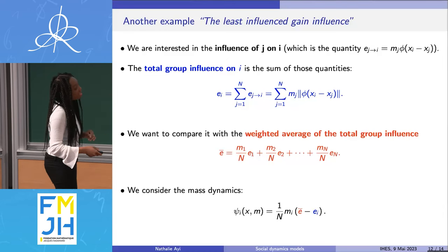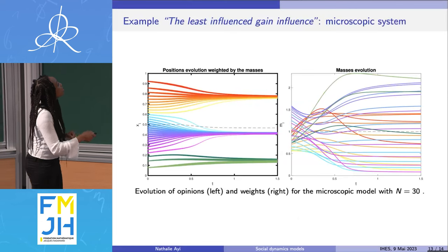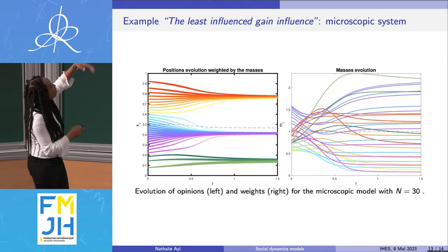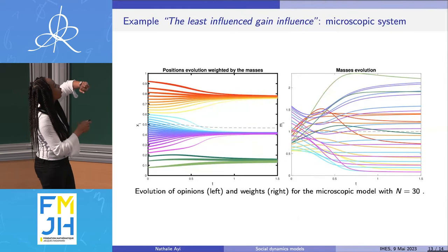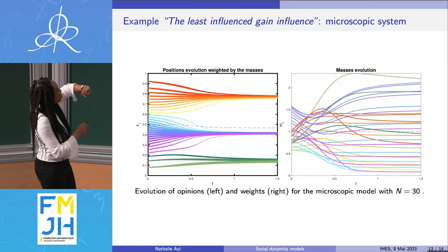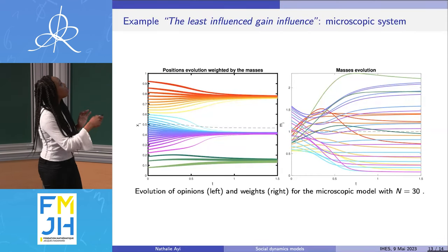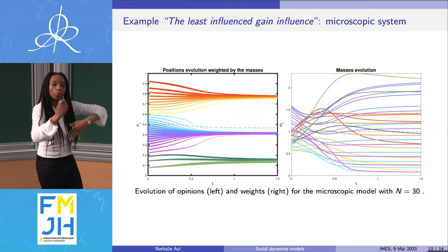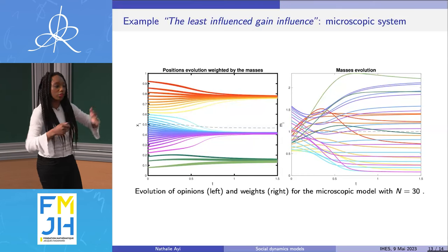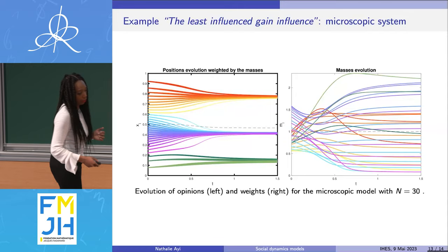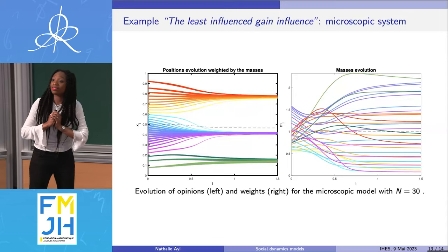This is what the model describes, and here is a simulation. In this case, you observe clusters — at the end there are three different opinions in the population. This is an example of how the weights of the different agents can evolve. Thank you for your attention.